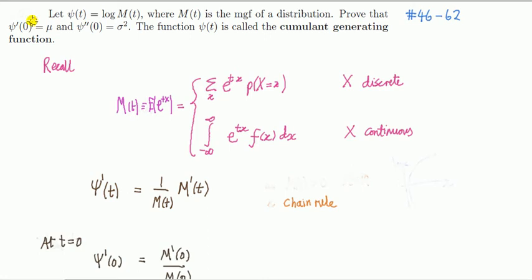We want to prove that this is true. Now this function, the log of MGF, is called the cumulant generating function. What this is saying is that the derivative of the cumulant generating function, the first cumulant computed at 0, is the mean, and the second cumulant computed at 0 is the variance.